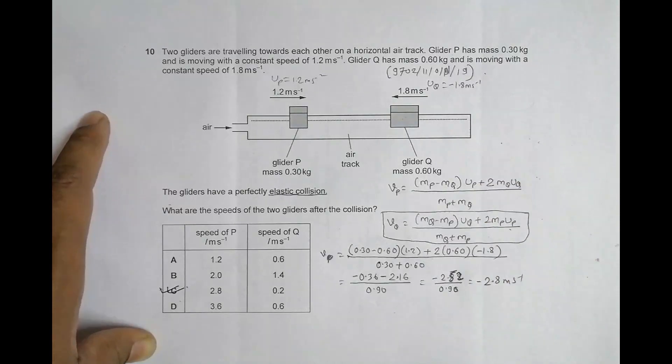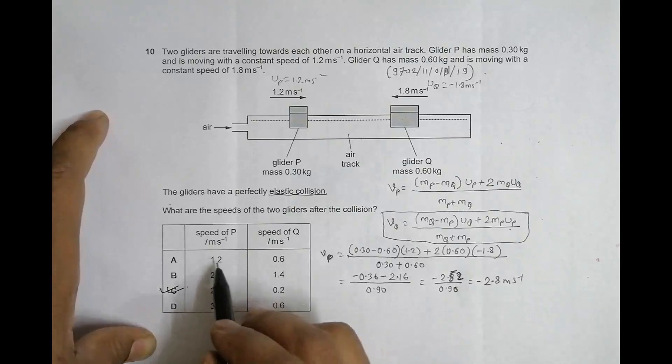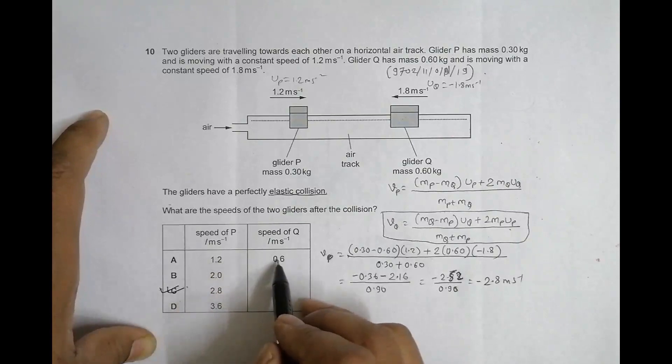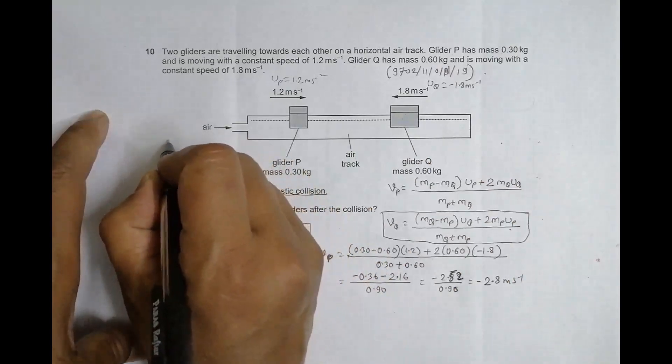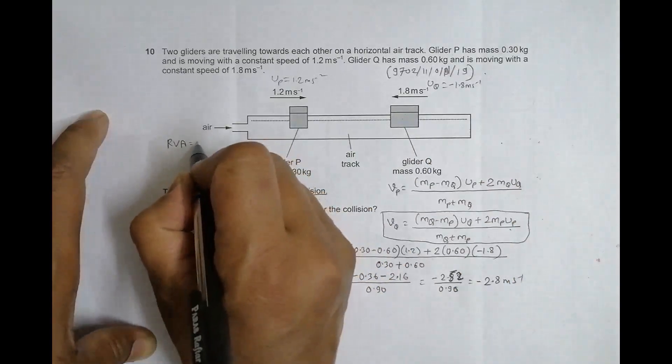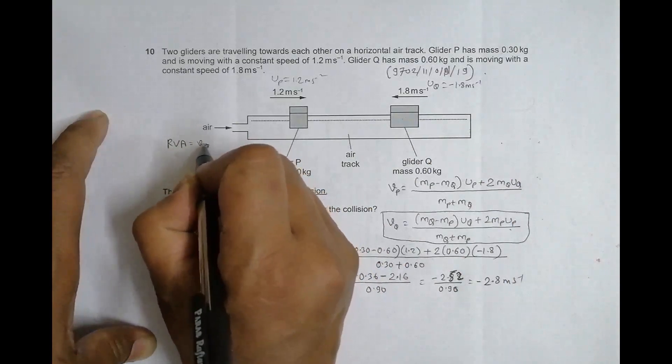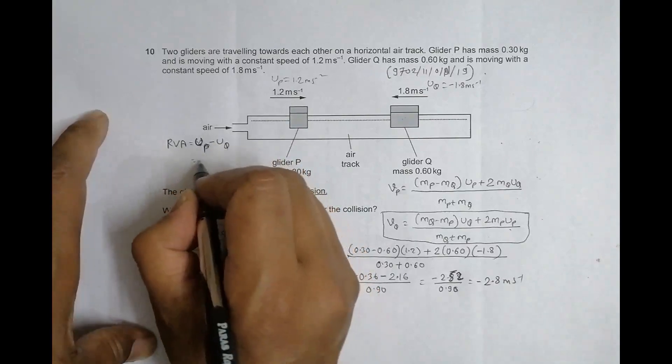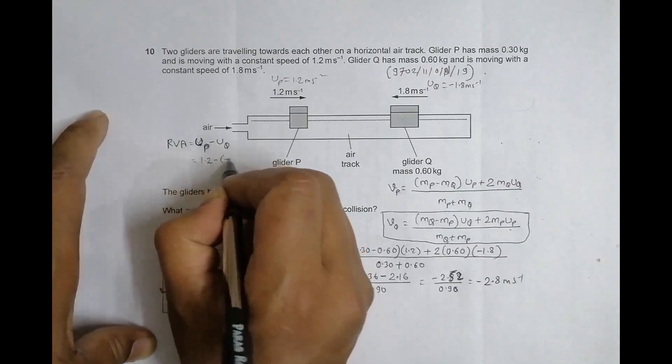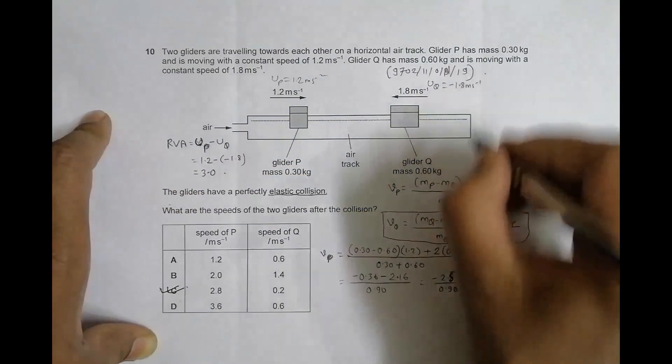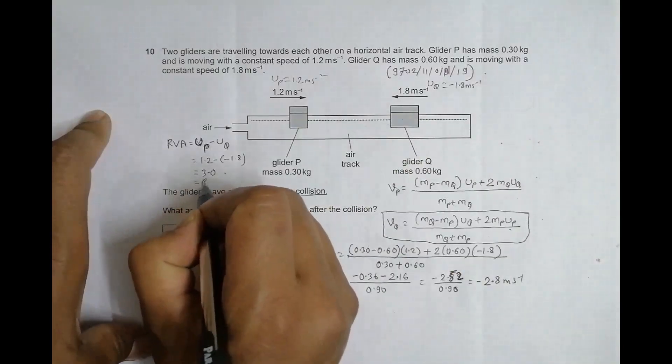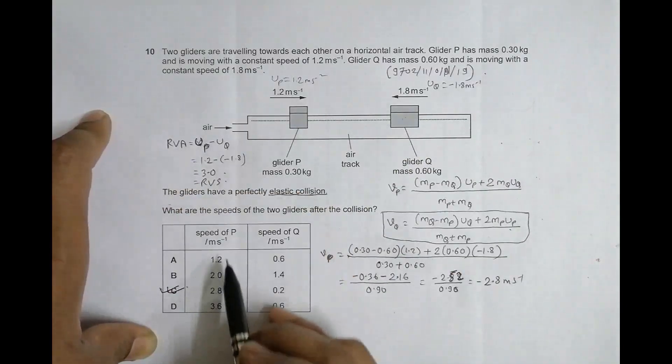Now the question arises, as I mentioned in the beginning, what happens if I try the approach of relative velocity of approach equal to velocity of separation? We can do that, but that gives you two correct choices. Let me go through this. The initial velocity of approach, the relative velocity of approach, is UP minus UQ equals 1.2 minus minus 1.8 equals 3.0.